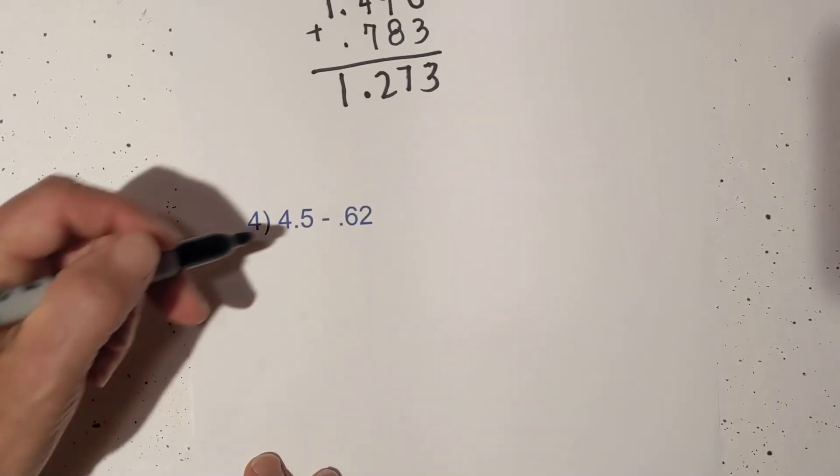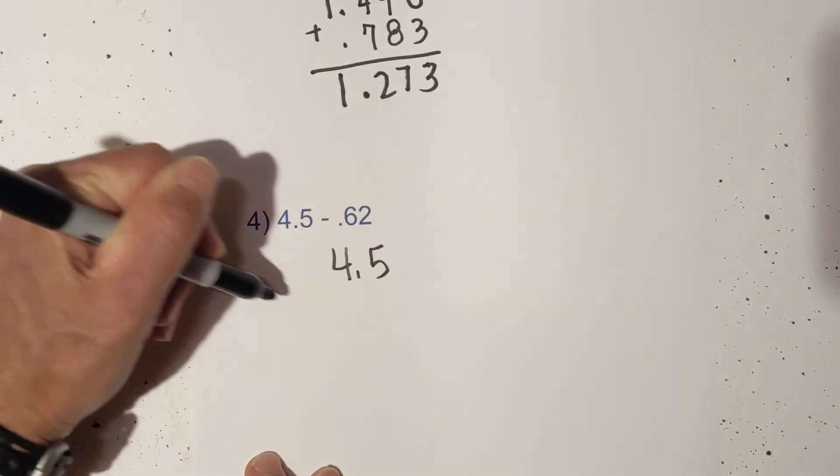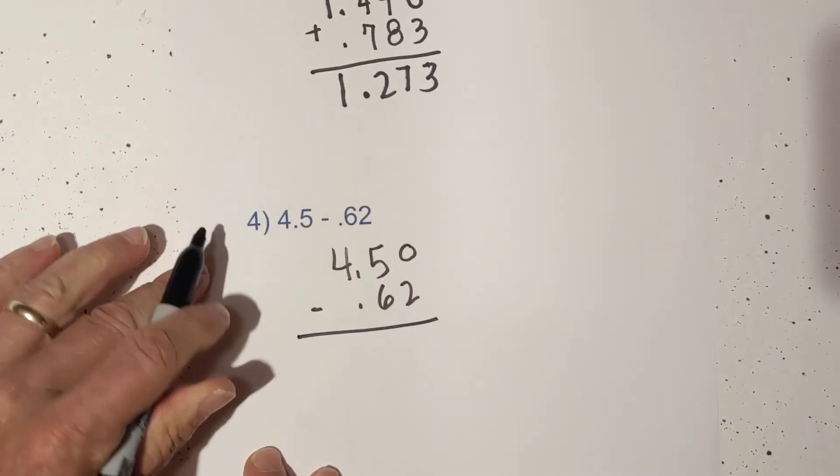And now our last one. This is subtraction again. We're going to line up the decimal. We're going to fill in any placeholders,